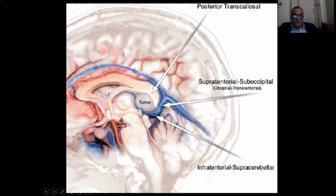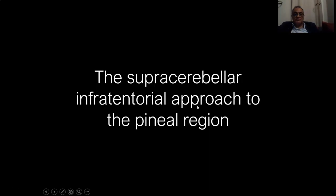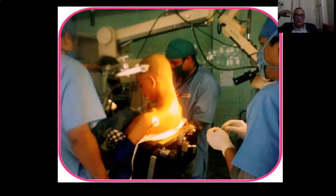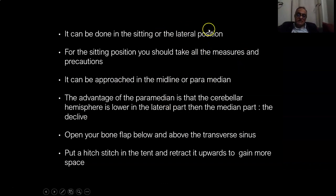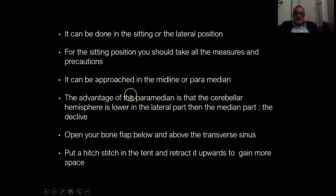This is an anteroposterior view of the pineal region. When you remove a tumor from the pineal region, you automatically enter the posterior third ventricle. You can reach it through the supratentorial supracerebellar approach between the cerebellum and the tentorium, or the posterior transcallosal or occipital transtentorial from the occipital lobe. For the supracerebellar infratentorial approach, the patient is in the semi-sitting position. You can also use the lateral position. Take all measures to prevent air embolism in the sitting position. It can be approached by a midline or paramedian approach; the advantage of the paramedian is that the cerebellar hemisphere is lower laterally. You open your flap, expose the transverse sinus, and do stitches in the tentorium, elevating it upwards to clarify the vision.